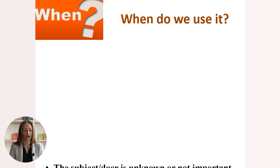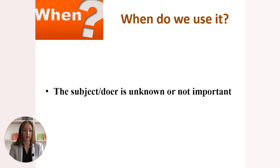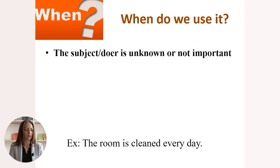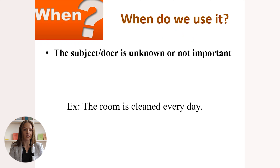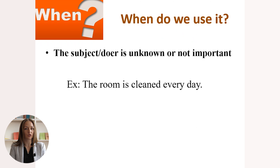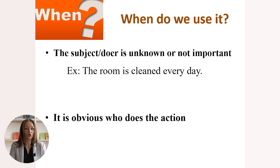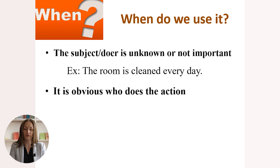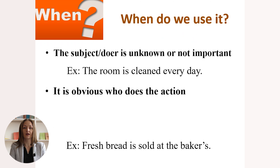When do we use passive voice? The first situation is when the subject or the doer is unknown or not important. Look at the example: 'The room is cleaned every day.' Another situation is when the doer is obvious — we know who performs the action. For example: 'Fresh bread is sold at the baker's.'